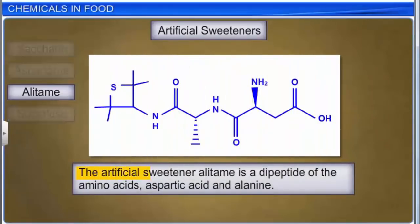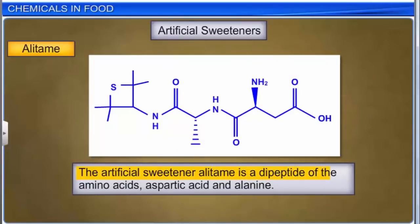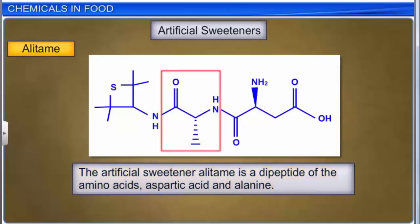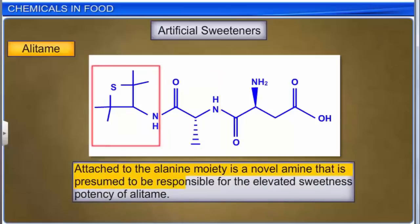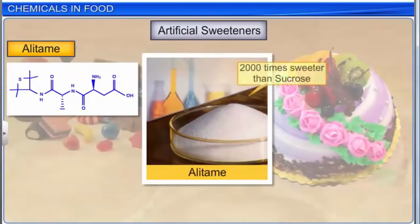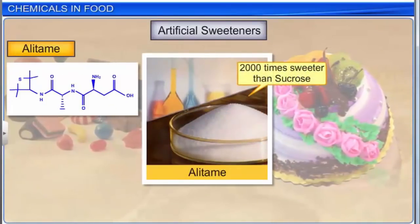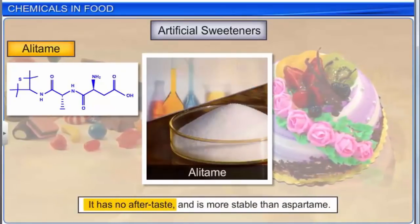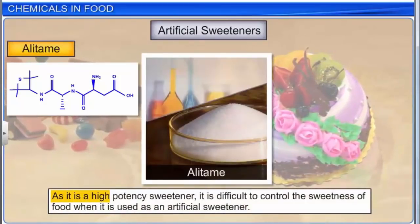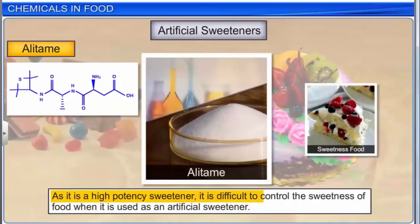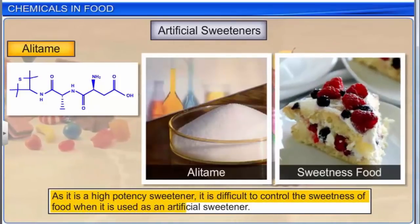The artificial sweetener alitame is a dipeptide of the amino acids aspartic acid and alanine, with a novel amine attached to the alanine moiety that is presumed responsible for its elevated sweetness potency. Alitame is about 2000 times sweeter than sucrose, has no aftertaste, and is more stable than aspartame. However, as it is a high-potency sweetener, it is difficult to control the sweetness of food when it is used.